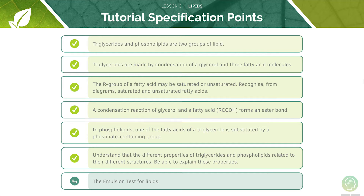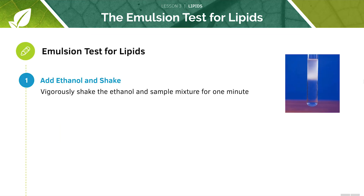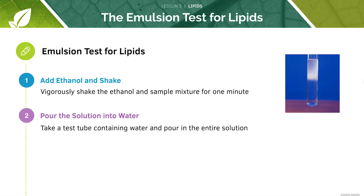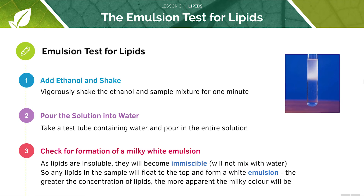Finally, we will look at the emulsion test for lipids. First, we must add ethanol to the sample and vigorously shake for one minute. Next, we pour the entire solution into a test tube containing water. Because the lipids are insoluble in water, they will become immiscible and will not mix with the water. Any lipids in the sample will float to the top to form a white emulsion. The higher the concentration of the lipids, the more apparent the milky colour will become.